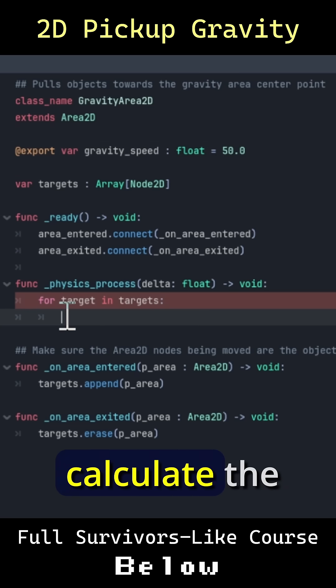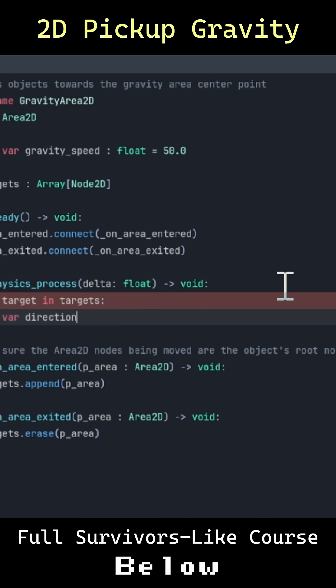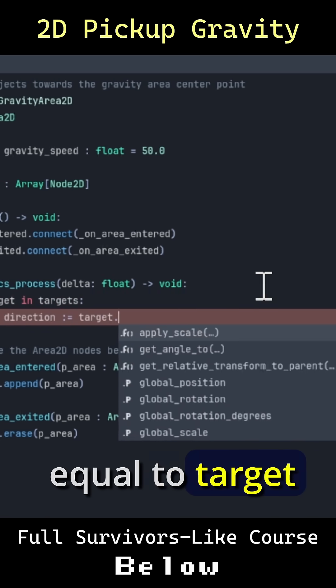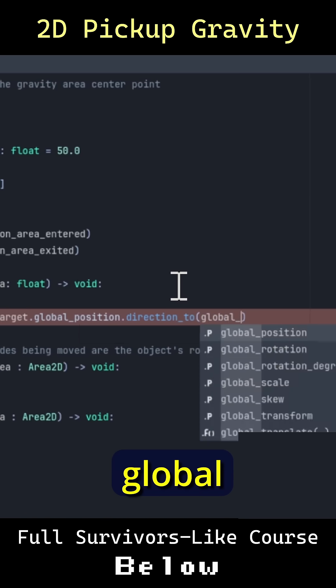Then we need to calculate the direction between the target and our gravity area center point. So var direction is going to be equal to target.global_position.direction_to(global_position).